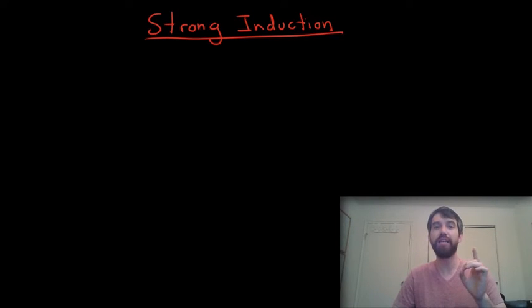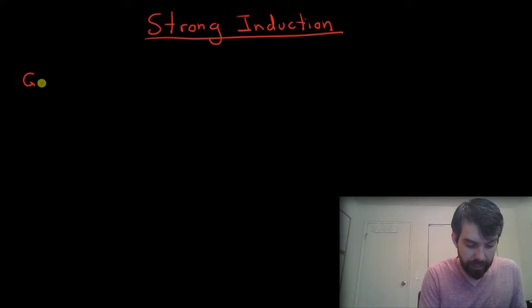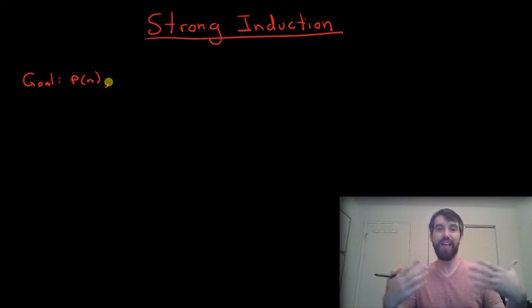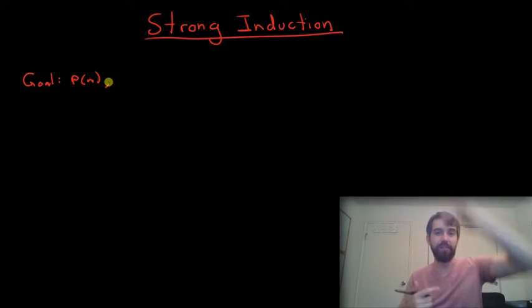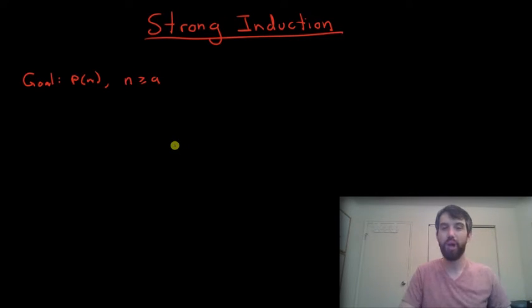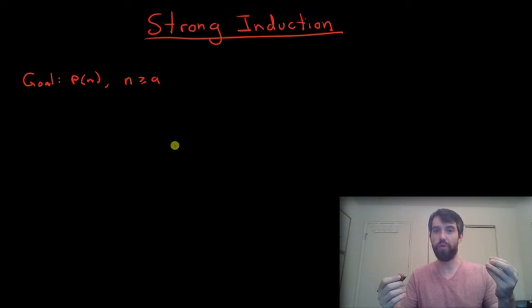What we're going to do in this video is something called strong induction. It's related, but allows you to prove a slightly more general set of claims. So the goal here is that we want to be able to prove some property, some P(n), is true. P(n) here is this whole infinite family of claims depending on n. In particular, we want to do it for all n greater than or equal to A. Often the A here is 1, but it doesn't have to be.